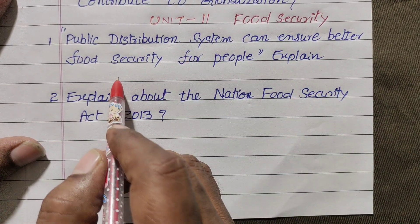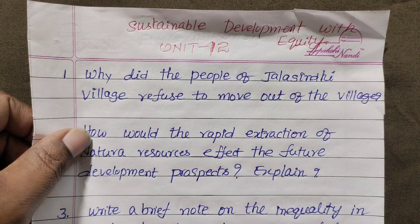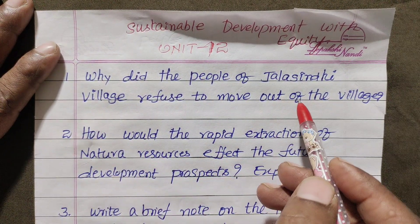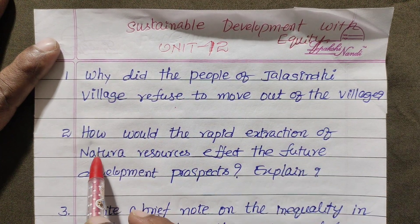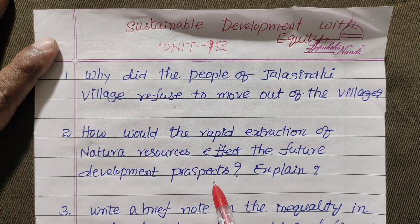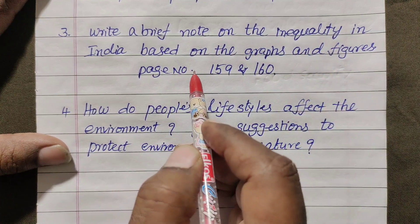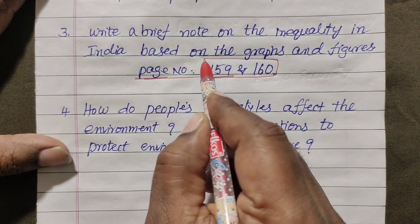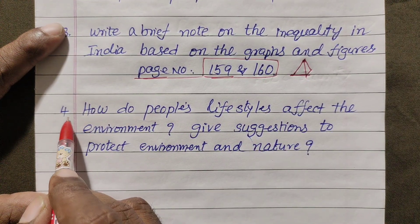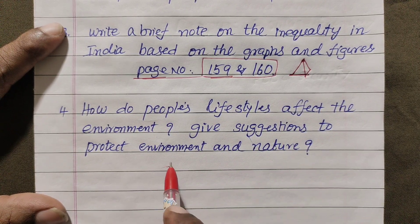Unit on Food Security. The public distribution system can ensure better food security for people. Second question: explain about the National Food Security Act 2013. Unit 12: Sustainable Development with Equity. First question: why did the people of Jalasindi village refuse to move out of the village? Second: how would the rapid extraction of natural resources affect future development prospects? Write a brief note on inequality in India based on graphs and figures. How do people's lifestyles affect the environment? Give suggestions to protect the environment and nature.